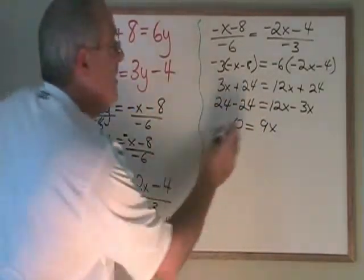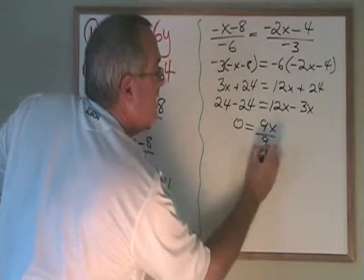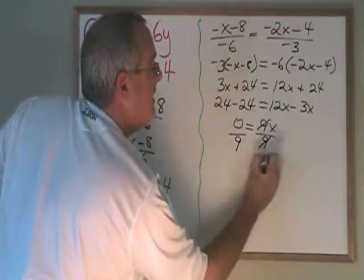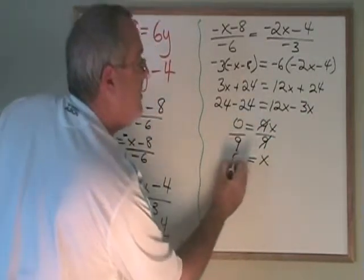I'm not done. If I divide both sides by 9, these cancel, and x is equal to 0 over 9, which means x is equal to 0.